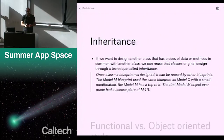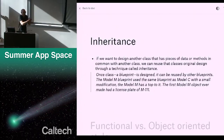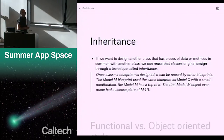Another cool thing about classes is that they have inheritance. The difference between the Model C and the Model M car is that the Model M inherits from the Model C. So if you want to design another class that has most of the same information from a different class, you can inherit that class and then tweak it as needed. You can reuse the class and its data, reuse the methods, or make new methods. The Model M blueprint uses the same blueprint as the Model C car, but with some small modifications.